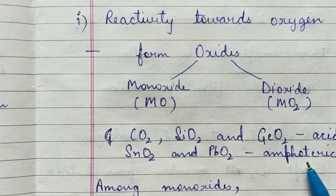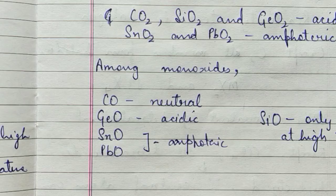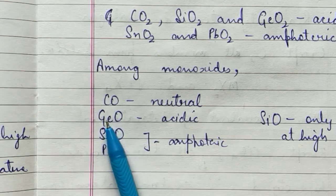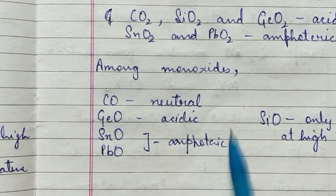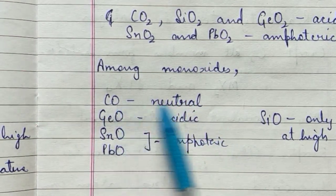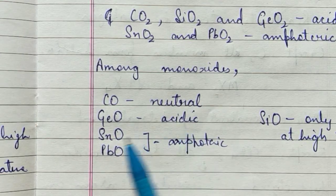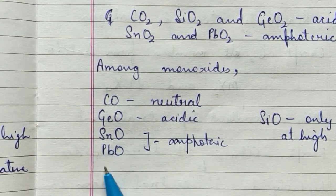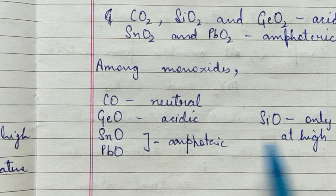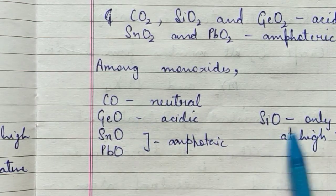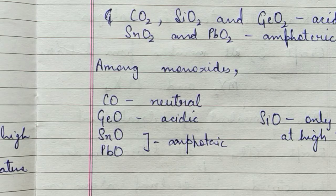For monoxides (MO): carbon monoxide is neutral, germanium monoxide is acidic, whereas tin oxide and lead oxide are amphoteric. Silicon monoxide is not included here because it only exists at very high temperatures and cannot exist at room temperature.